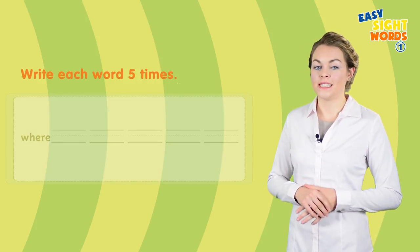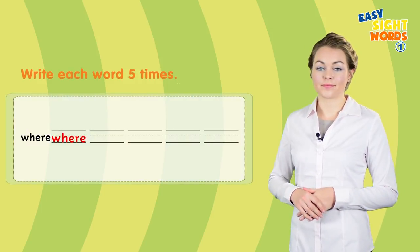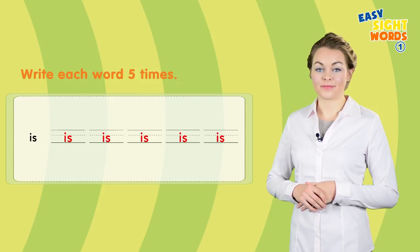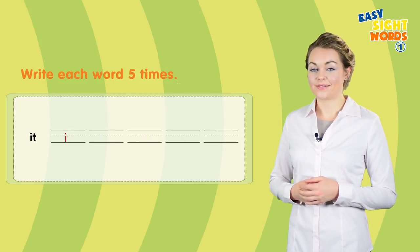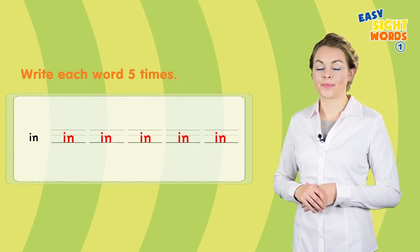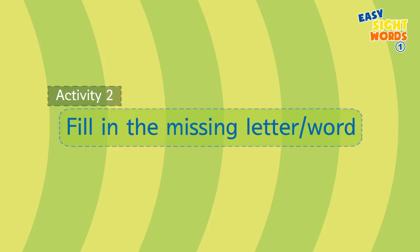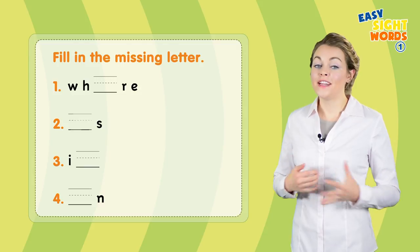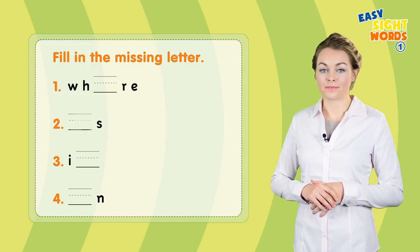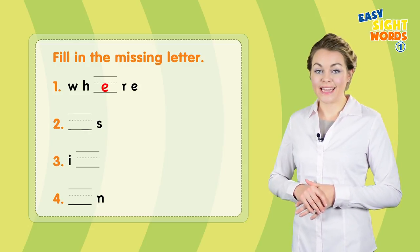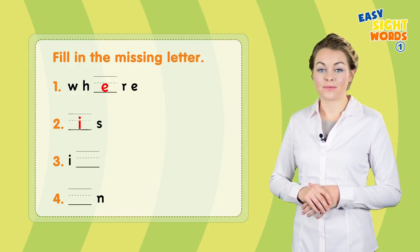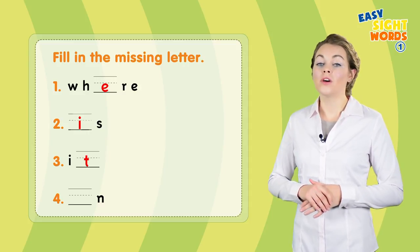Write each word five times: where, is, it, in. Now fill in the missing letters. Number one: where. Two: is. Three: it. Four: in.